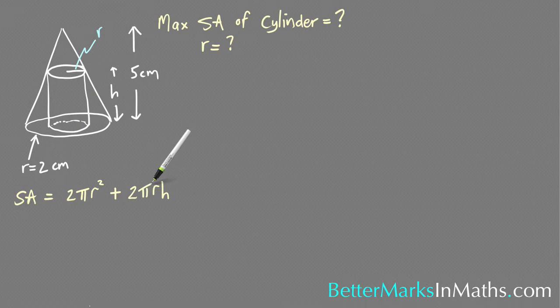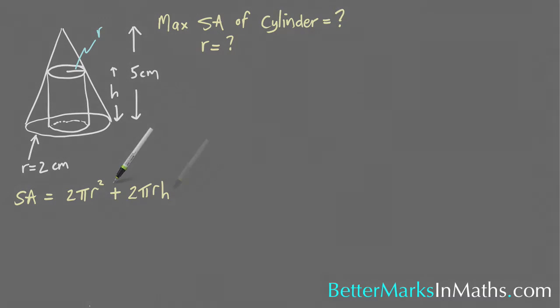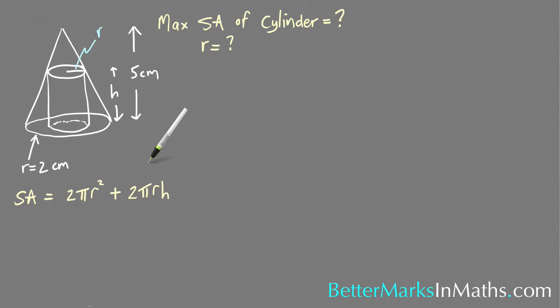To find the derivative of this with respect to a variable you need to have only one variable, and because there's only one h in it what I'm going to try and do is get h in terms of r and then sub that back in here and then I'll be able to find the derivative of this.